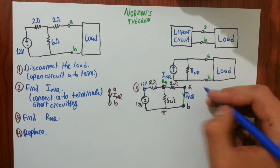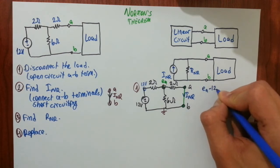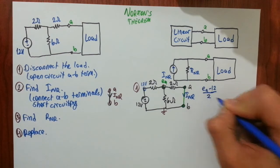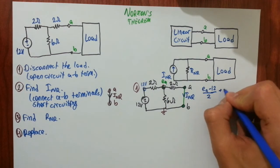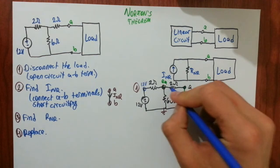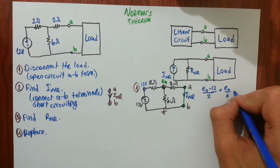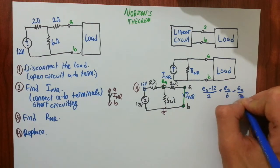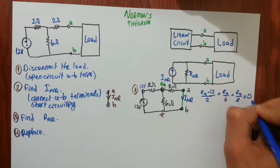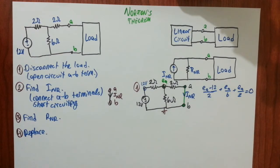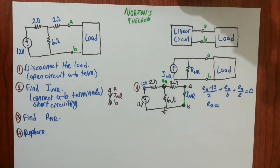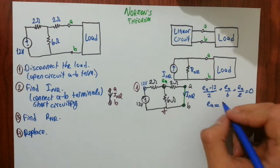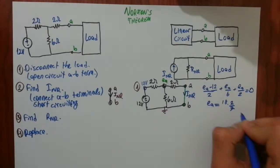We don't know current through this one. Assume it to be away from node A. So current through it is Ea minus 12 over 2. We don't know current through this one. That is Ea over 6 simply. And we don't know current through this one. That is Ea over 2. Whole equal to 0 by KCL.